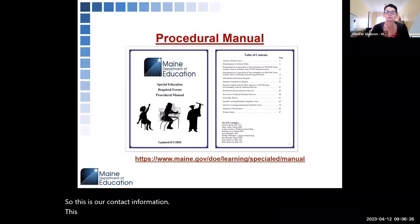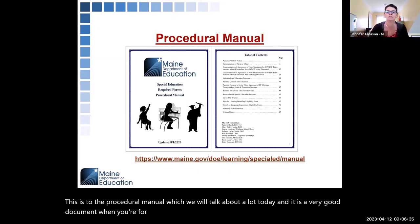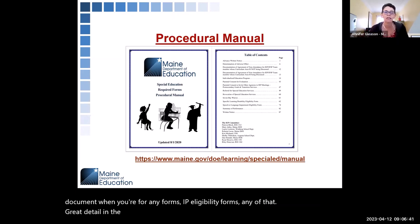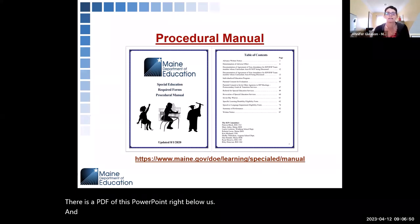This is a link to the procedural manual, which we will talk about a lot today. It is a very good document for any forms — IEP, eligibility forms, any of that — great detail in the procedural manual. There is a PDF of this PowerPoint right below, and you can click the link to get the procedural manual.